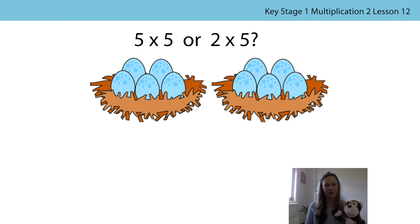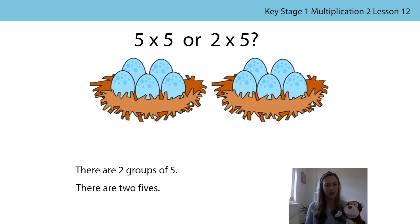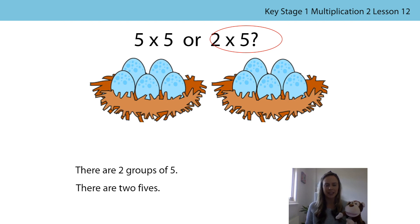Let's look together. Bunga and I think that we can see two nests. Do you agree with us? And there are five eggs in each nest, so we can say that there are two groups of five, or two fives. So which multiplication expression represents two fives? We thought it was two times five. We're correct. We know that two times five represents the picture because the two represents the number of nests and the five represents the number of eggs in each nest. It can't be five times five because we've only got two groups of five.